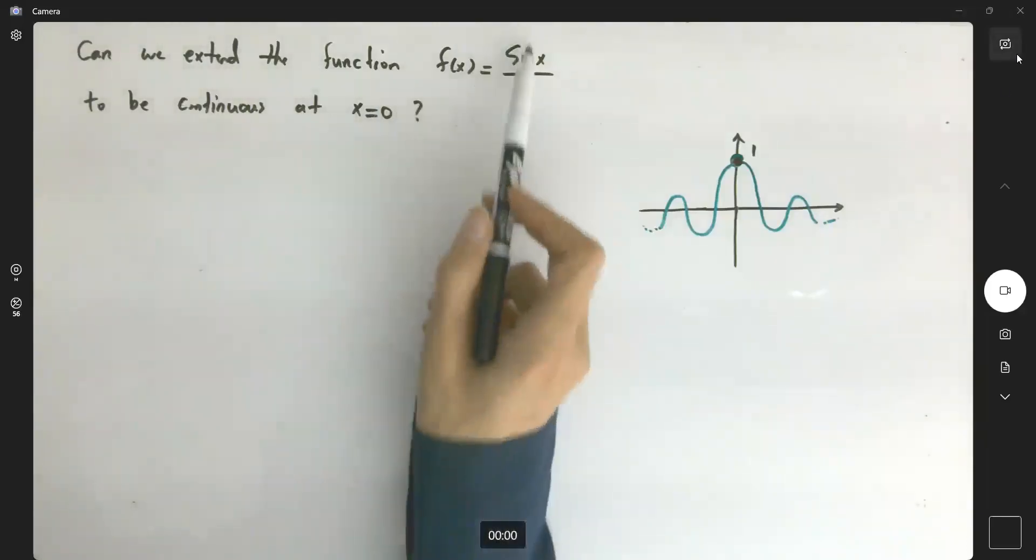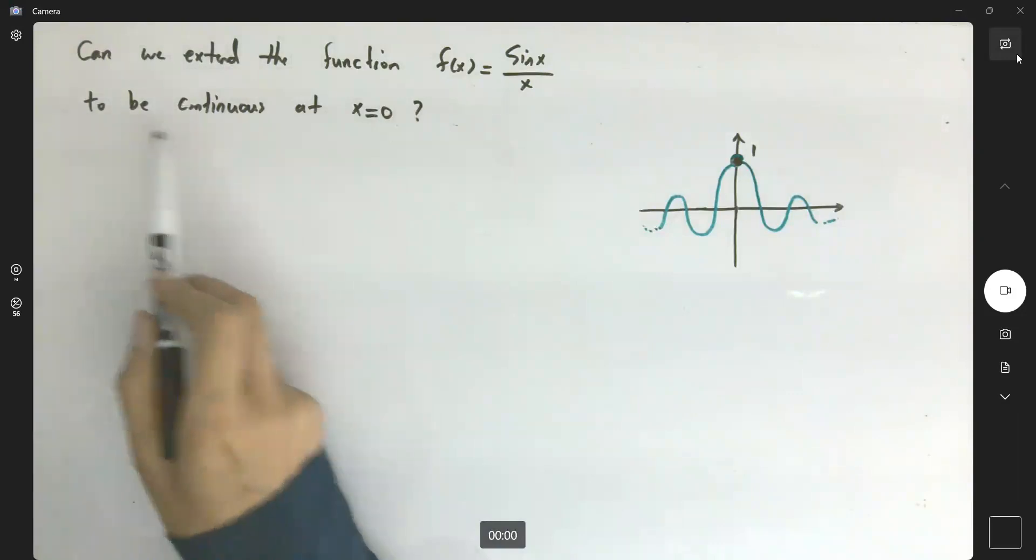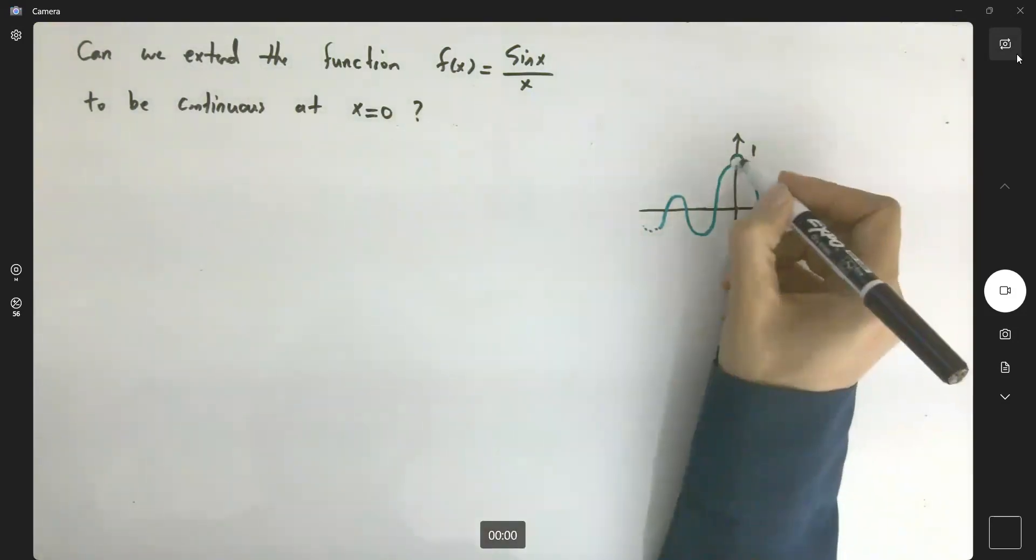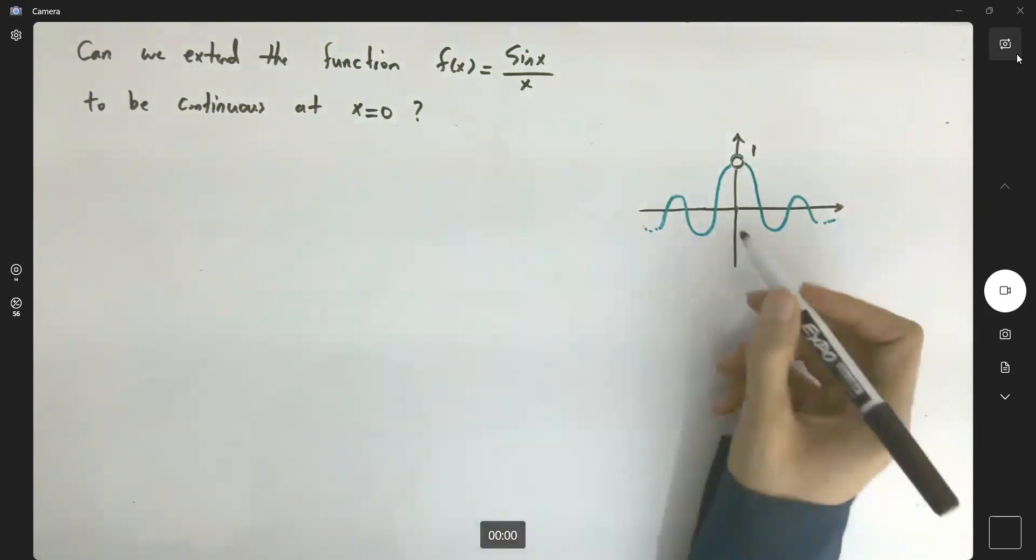Can we extend the function sin(x)/x to be continuous at x = 0? Recall that this function originally doesn't include this point. There is a hole in the graph of the function as x approaches 0.